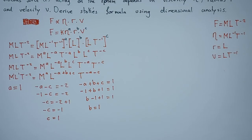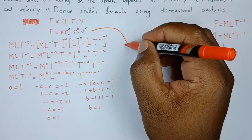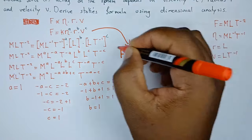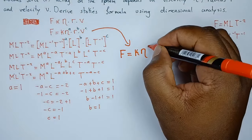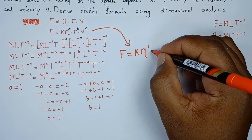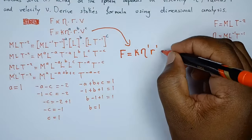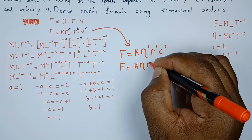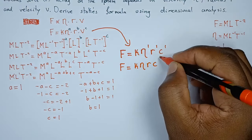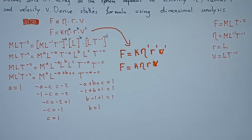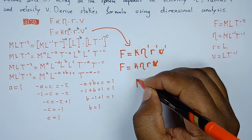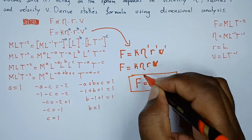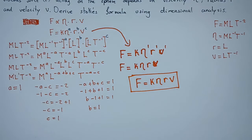So we have found the values of A, B, and C. Now what do we do with them? Remember we're supposed to derive this formula. So picking it up from here, we can say F equals K η r v. This is the formula we're looking for. We have derived it.